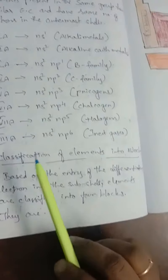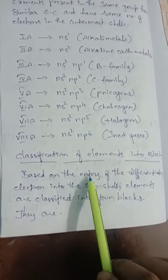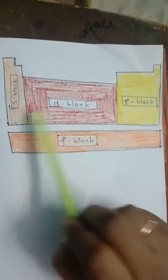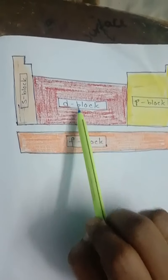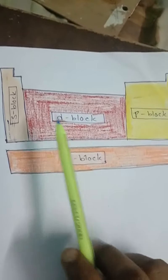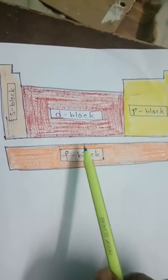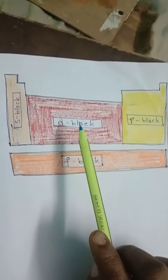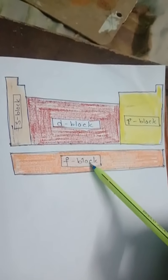Next comes the classification of elements into blocks. Based on the entry of the differentiating electron into a subshell, elements are classified into 4 blocks: S block, P block, D block, and F block. The S block is present on the left side, P block on the right side, D block in the middle, and F block at the bottom of the long form of the periodic table.